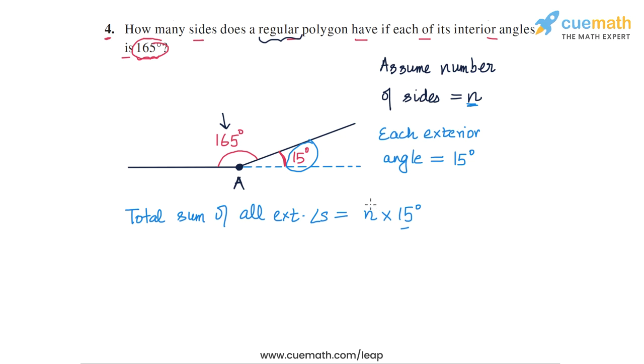And now the thing is that this sum, n into 15 degrees, should also be equal to 360 degrees, because we know that the sum of all exterior angles of any polygon is equal to 360 degrees. So this is how we get an equation in n: n into 15 degrees is equal to 360 degrees.